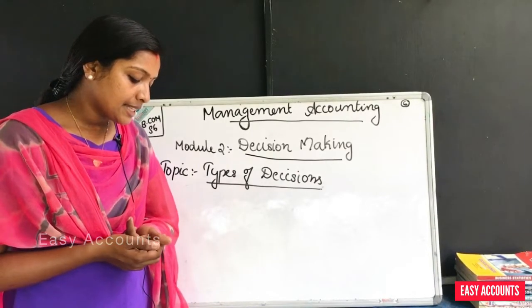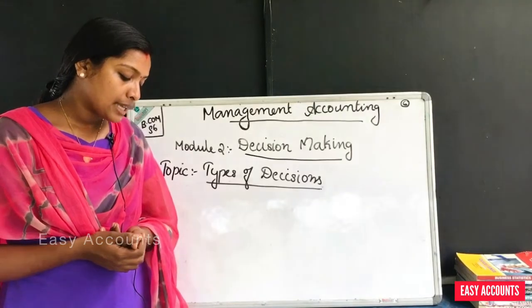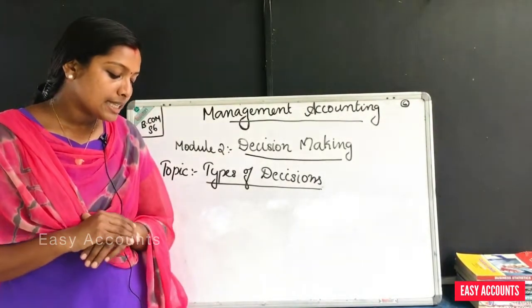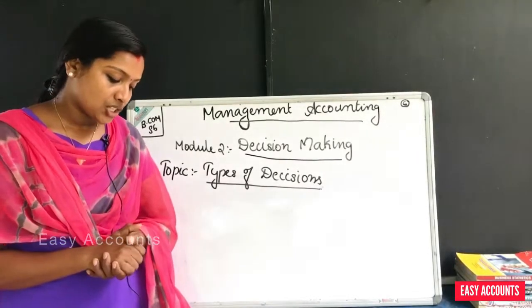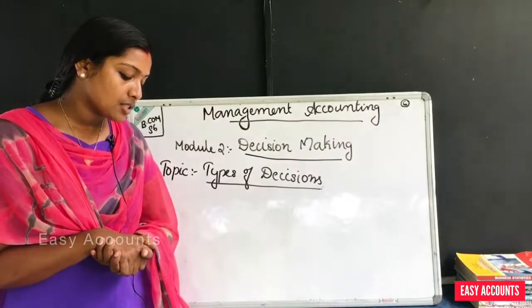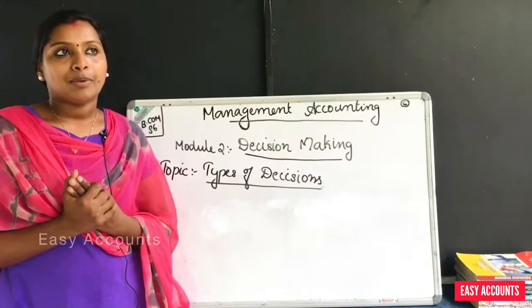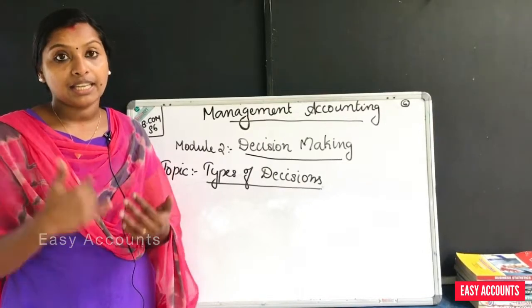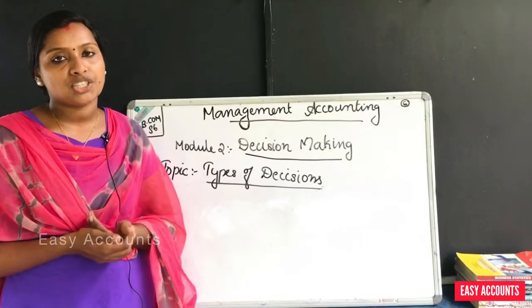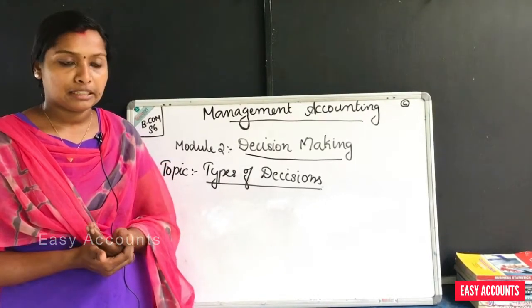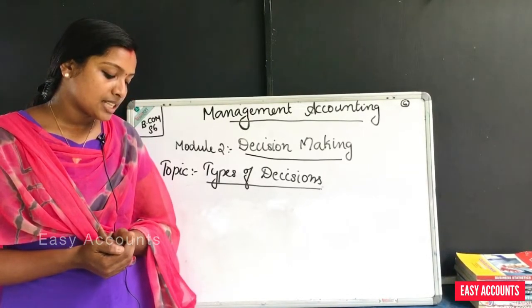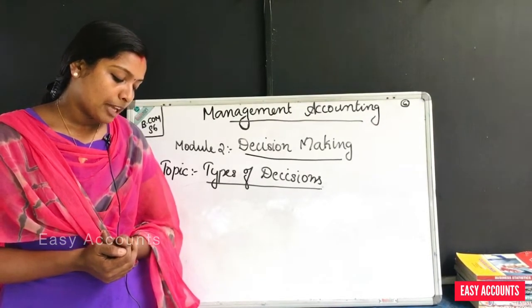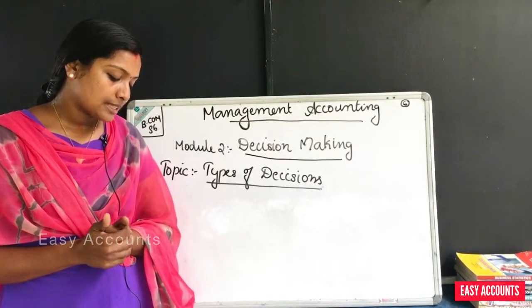Strategic decisions relate to policy matters which require fact-finding and analysis of possible alternatives. Much deliberation and judgment are needed because these decisions deal with unique problems and policy issues. They need huge investment of funds and are taken by top-level management — for example, price reduction or installation of an automatic plant.